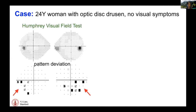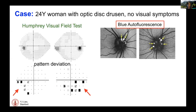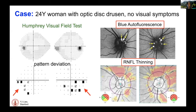Her optic nerve photos show obvious visible Optic Disc Drusen on both sides. Her visual field was pretty good, with a few spots inferiorly, especially temporally. On blue autofluorescence imaging, you can see visible drusen, and she has some thinning of the retinal nerve fiber layer on both sides.